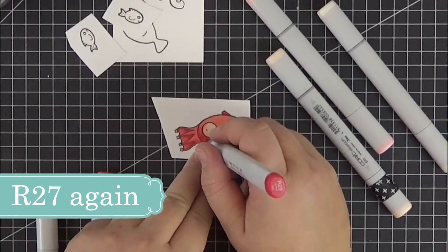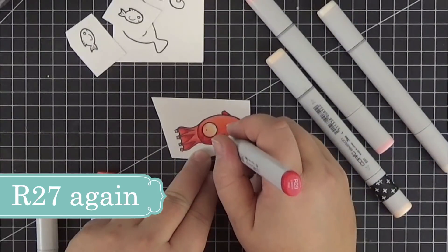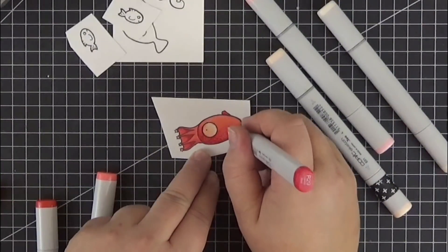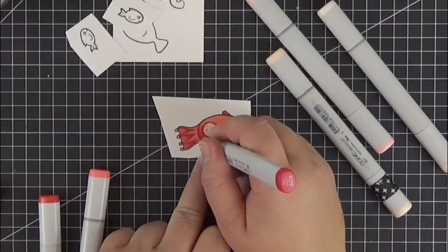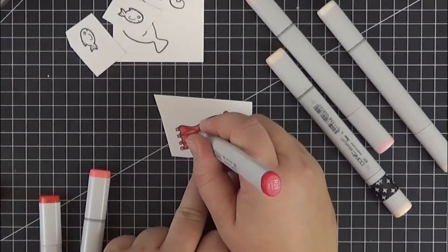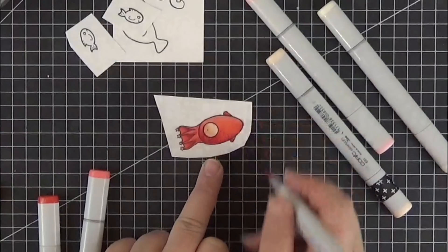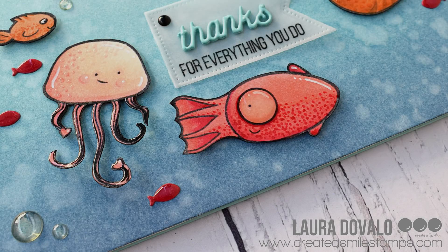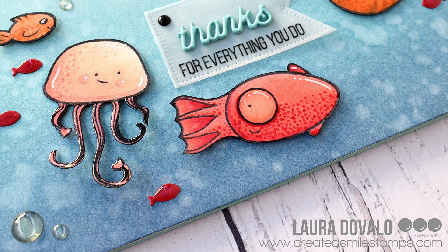I also added some dots with the darkest color to give a little bit of texture to the skin and darken the shadowy parts some more. Off camera, I added a few white lines with a Sharpie marker and of course some glossy accents to the eye.